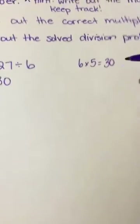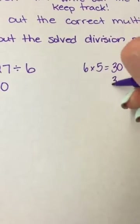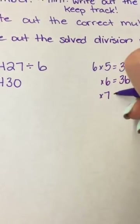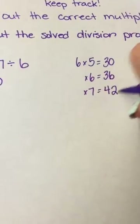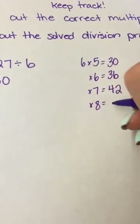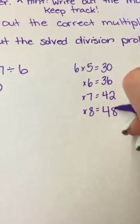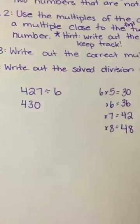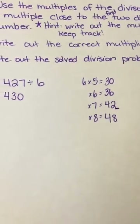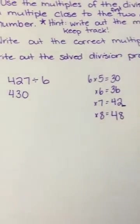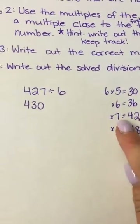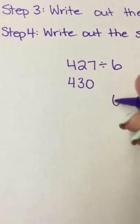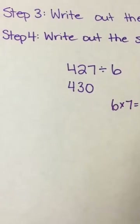6 times 6 is 6 more, and 6 times 7 is 6 more again, and 6 times 8 is 6 more again. I can stop because my first two digits are 43, and that's really close to 42. So 6 times 7 equals 42 — that's the multiplication equation I'm going to use to help me estimate this answer.